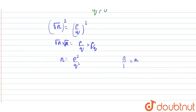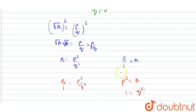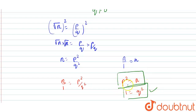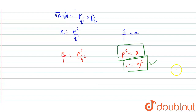We can write this as n/1 = p²/q². From this we can say that p² = n and q² = 1. Now, p² = n cannot hold because we have assumed n is not a perfect square.